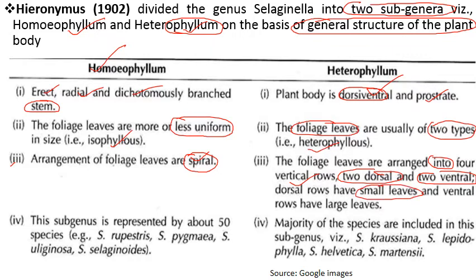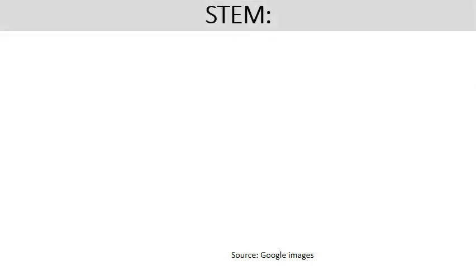The Homeophyllum subgenus is represented by about 50 species, for example Selaginella rupestris, Selaginella pygmaea, Selaginella uliginosa, and Selaginella selaginoides. The Heterophyllum subgenus includes the majority of species, such as Selaginella krausiana, Selaginella lepidophylla, Selaginella helvetica, and Selaginella martensii.